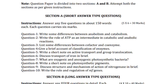Question 1: Write some differences between anabolism and catabolism. Question 2: Write the role of ATP as an intermediate in catabolic and anabolic reactions. Question 3: List some differences between cofactors and coenzymes. Question 4: Give a brief account of classification of enzymes. Question 5: Write a short note on active transport and group translocation.